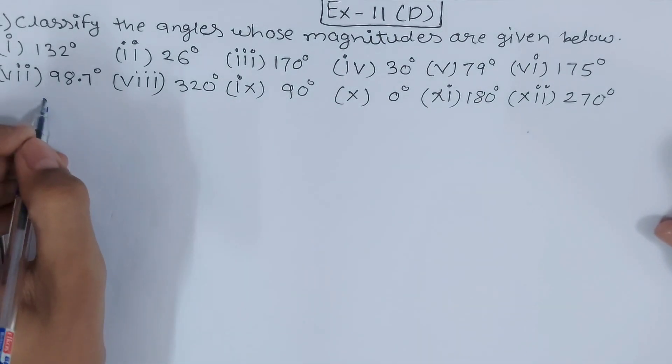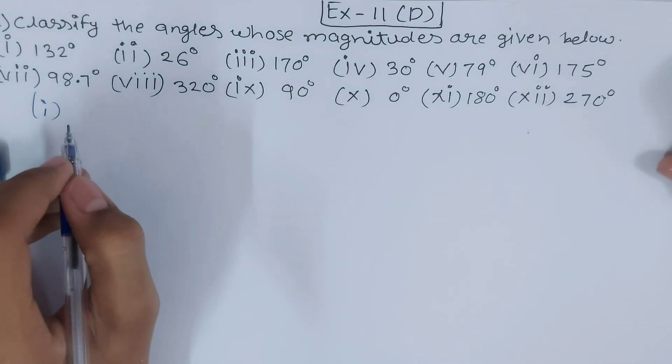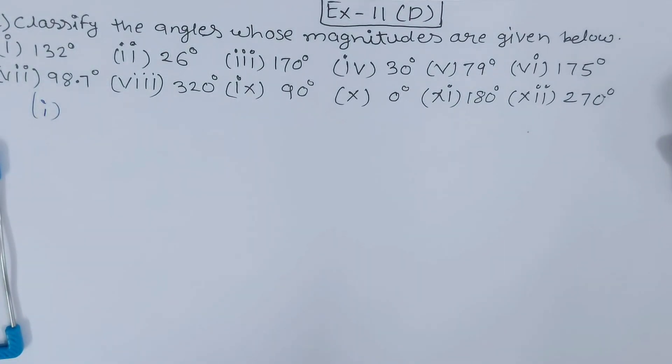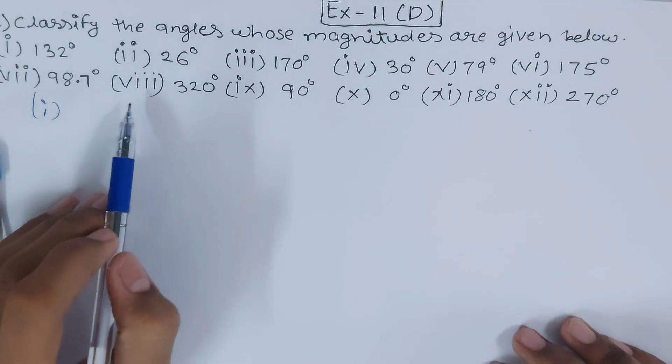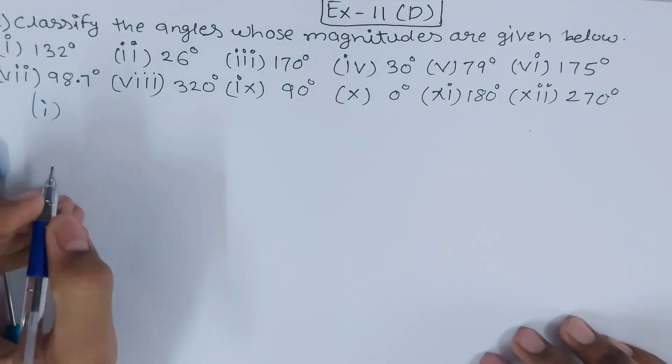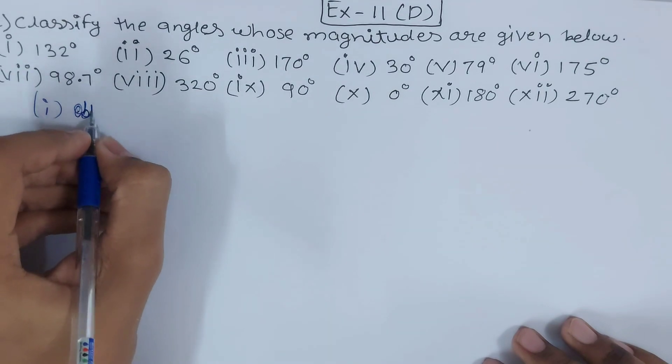First part is 132 degrees. 132 is more than 90 and 132 is less than 180. So which category will it go in? It will become an obtuse angle.